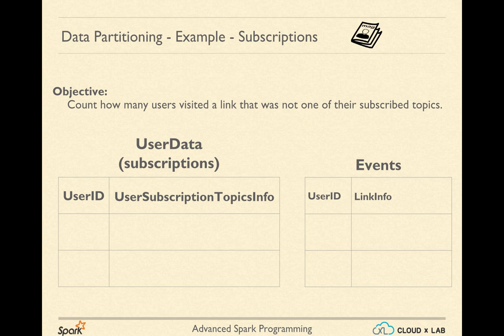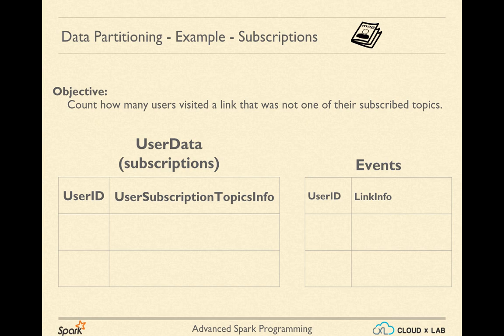Let us put down the kind of data we have. We have a large table, user data, which is loaded in the form of an RDD containing pairs with two fields: user identifier and the topics that user has subscribed to. So user data represents the user's subscription. We also keep a record of all user activities — who clicked on which topic link. We call these events, and this RDD of events contains user ID and link info pairs. It is a smaller table because it has only the last 5 minutes of user activity.